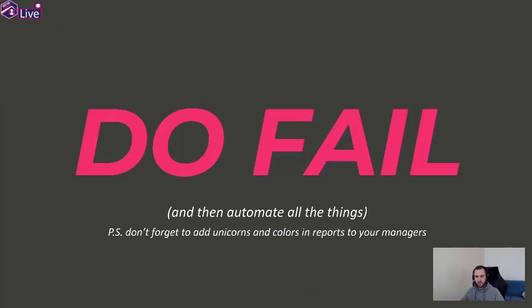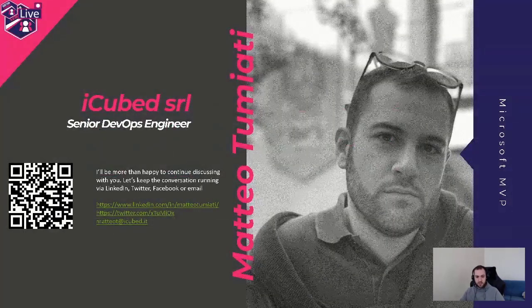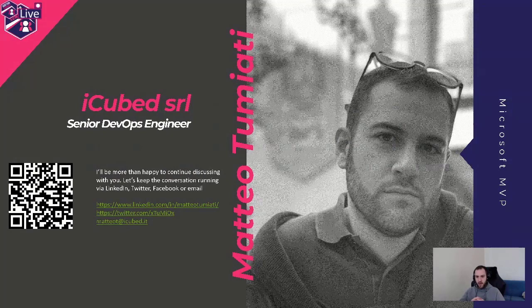In the end, I'd like to say that you need to fail — like I did — because the sooner you fail, the sooner you'll learn and the sooner you'll automate all the things you need. And with that said, please do not forget to add unicorns and colors to all the reports you're doing for your manager — in PDF, Excel, or PowerPoint — because they will not get it otherwise. I'd be more than happy to continue the conversation answering questions here or on Twitter, LinkedIn, or via email. Thank you.